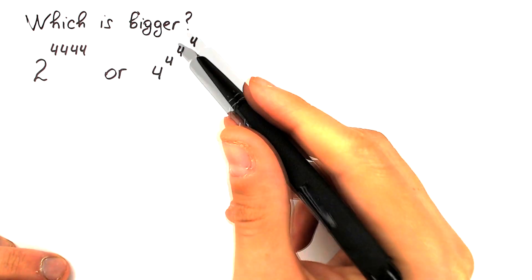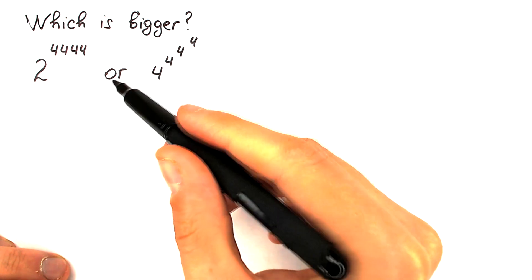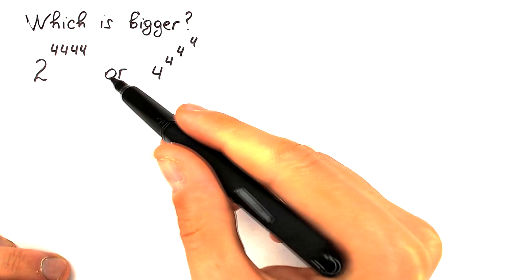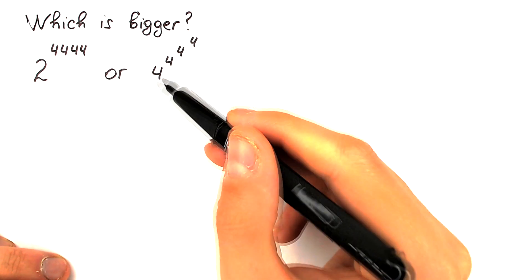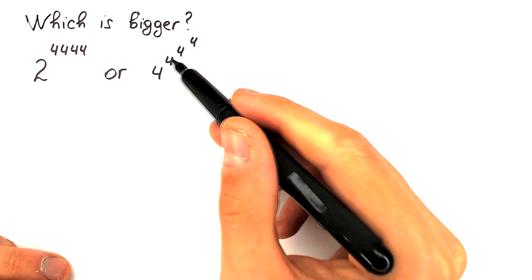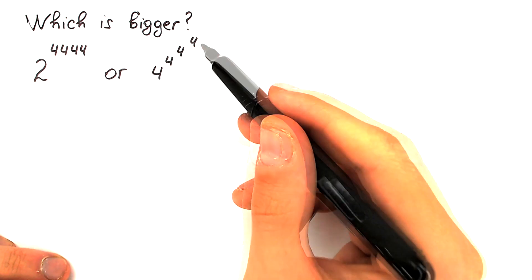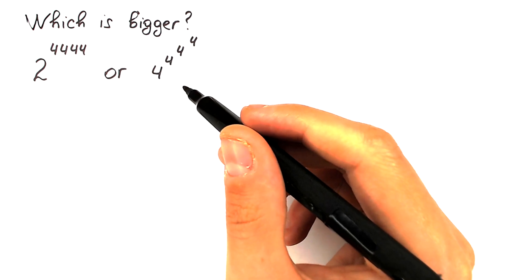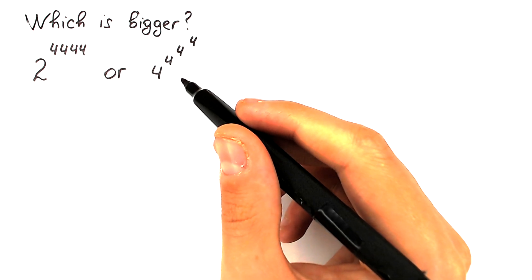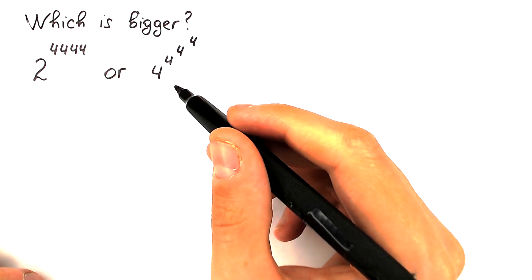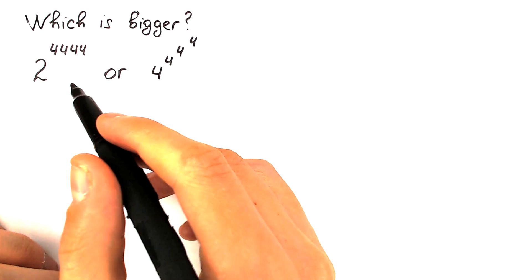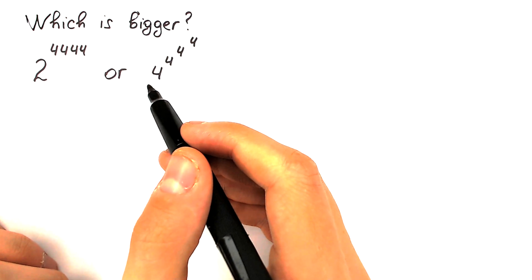Really interesting challenge today. Which one is bigger? On the left-hand side, 2 to the power 4444, and on the right-hand side we have 4 to the power 4 to the power 4 to the power 4. Let's use our supercomputer in our head — don't use a calculator — and write your suggestion down in the comment section. Which one is bigger, left-hand side or right-hand side?